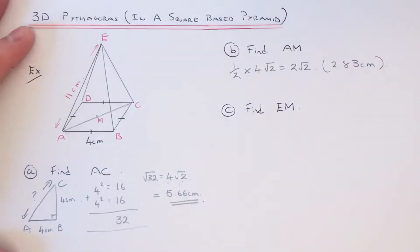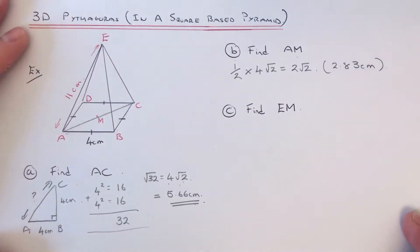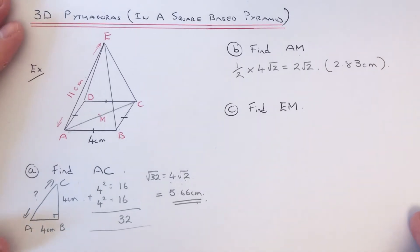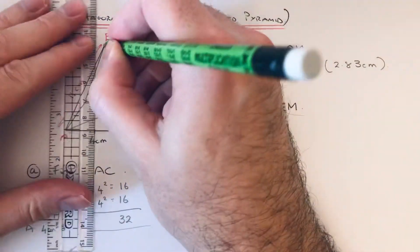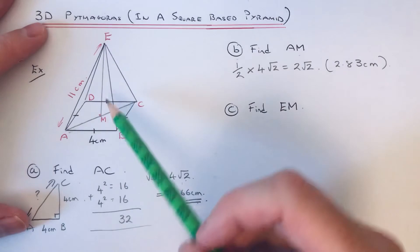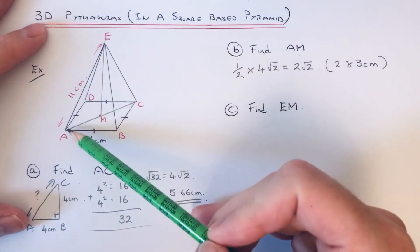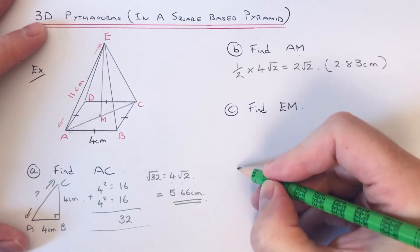And then part C: you've got to find EM. So EM is this length here. So the right-angle triangle this time we're going to use will be AME. So again, I'm just going to sketch that one out: A, M, and E.